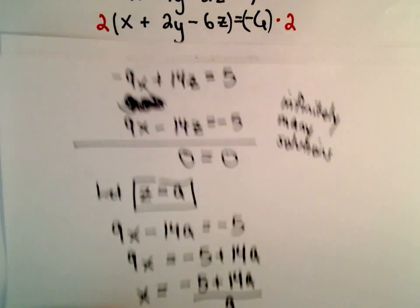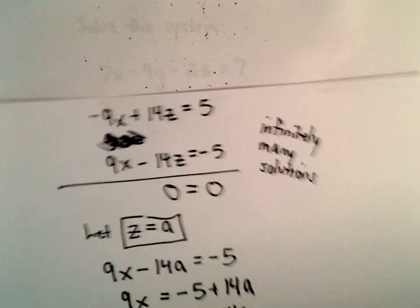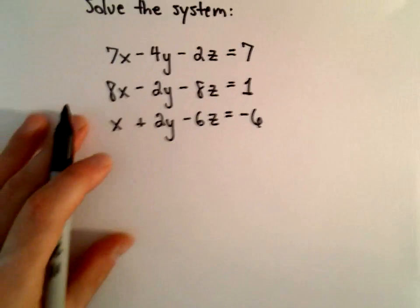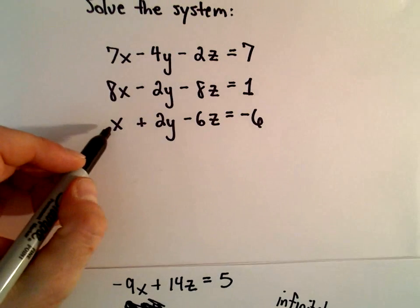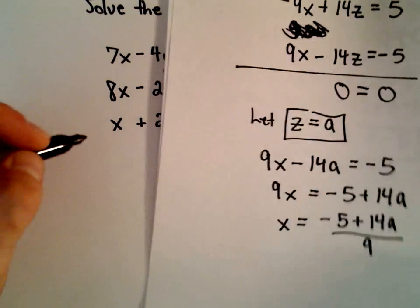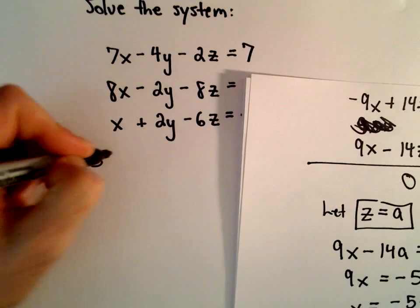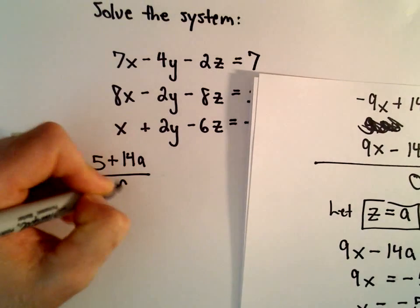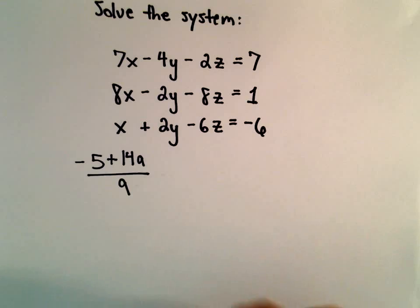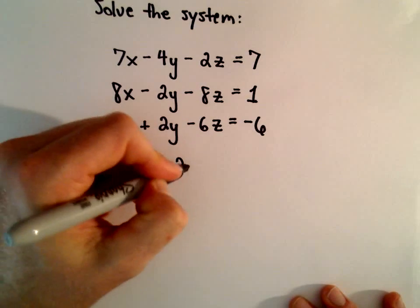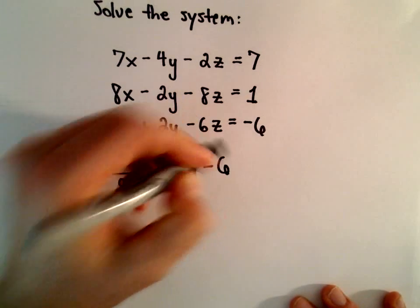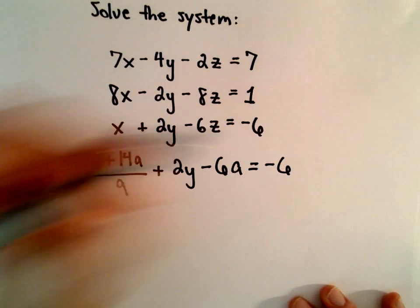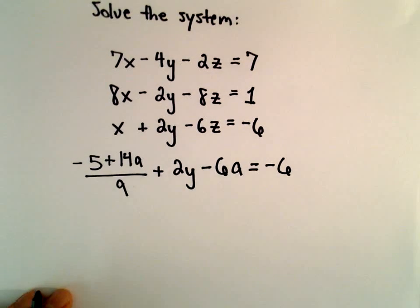So now we simply need to take one of our other equations involving y and figure out the value of y also in terms of a. I'm going to use my third equation. So we've got x, which was negative 5 plus 14a over 9, plus 2 times y minus 6 times z, which we're letting equal the value of a. And now I need to solve for y.